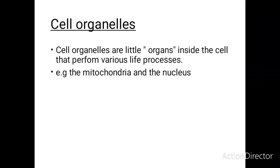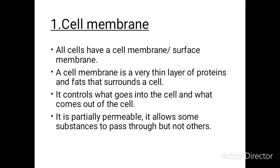Let's now move on to the cell organelles. Cell organelles are the little organs found inside the cell that perform various life processes — for example, the mitochondria and the nucleus. The mitochondria provides energy for the cell and the nucleus contains the genetic material. The first organelle we are going to look at is the cell membrane. A cell membrane is a very thin layer of proteins and fats that surrounds a cell. It controls what goes into and out of the cell, and it is partially permeable, meaning it allows some substances to pass through but not others. The main function of the cell membrane is to control movement in and out of the cell and to protect the cell.